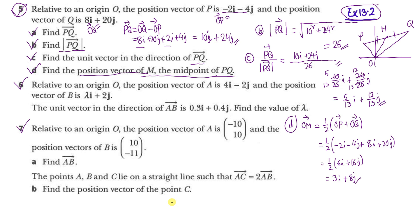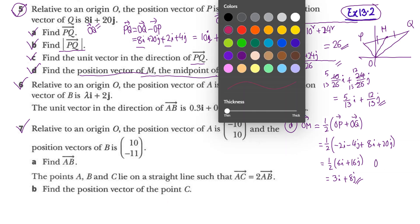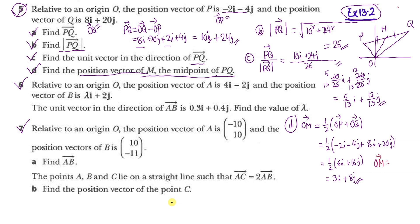We can also verify using the alternative method: OM = OP plus PM, where PM equals half of PQ. OP is minus 2i minus 4j, plus half of PQ which is 10i plus 24j. That gives minus 2i minus 4j plus 5i plus 12j, which simplifies to 3i plus 8j — the same answer.